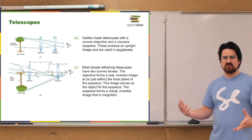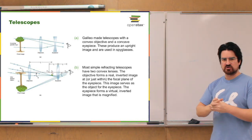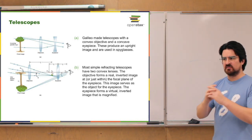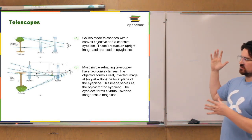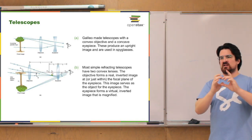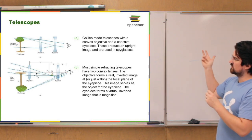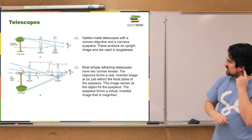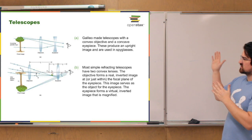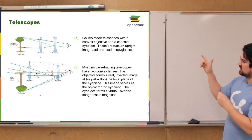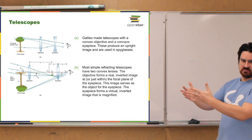The next useful thing you could make with lenses are telescopes. The microscope was allowing you to make a small object that's up close much larger to see the detail. Telescopes generally take objects that are very far away and make them large enough to see a little better with your eye. One example: Galileo made a telescope with a converging objective lens and a diverging eyepiece — usually called a spyglass — which creates an upright image that appears much closer than the actual object.